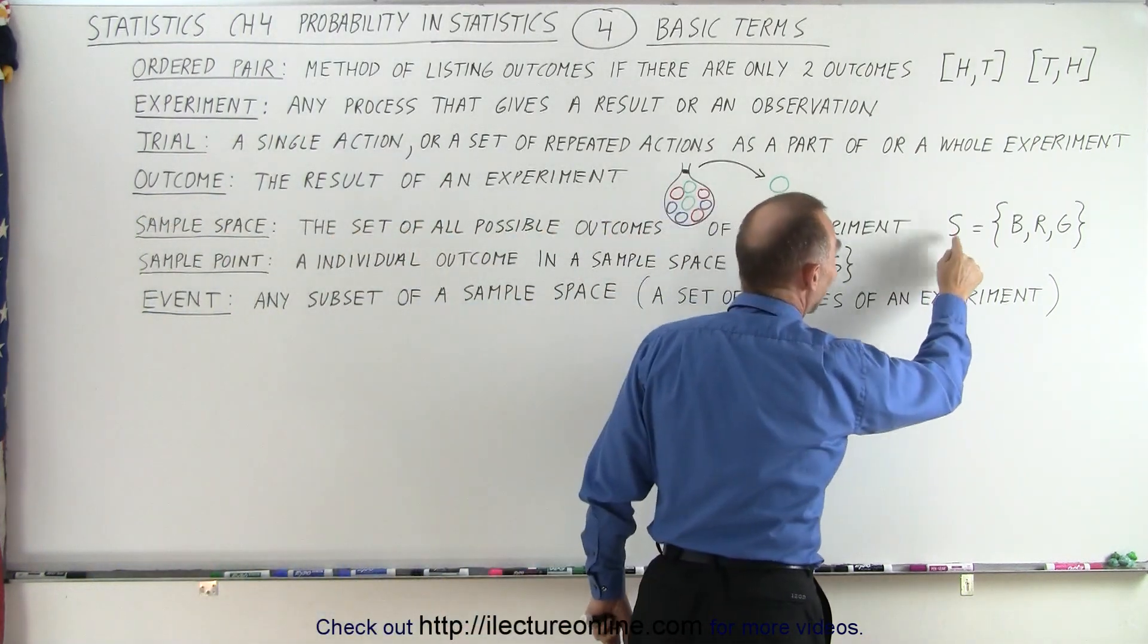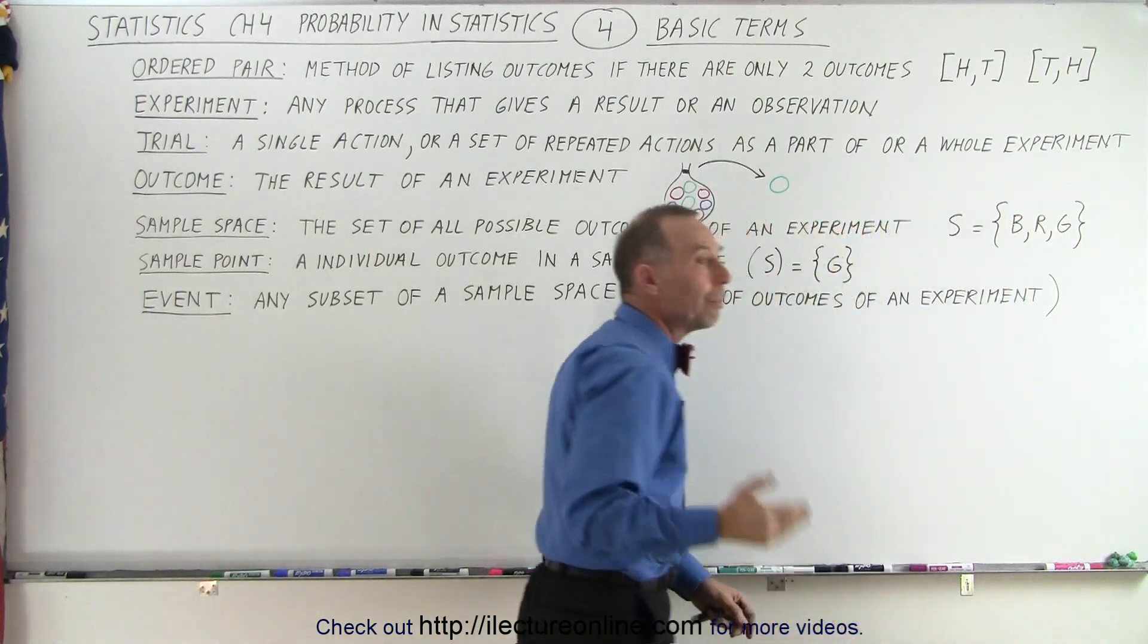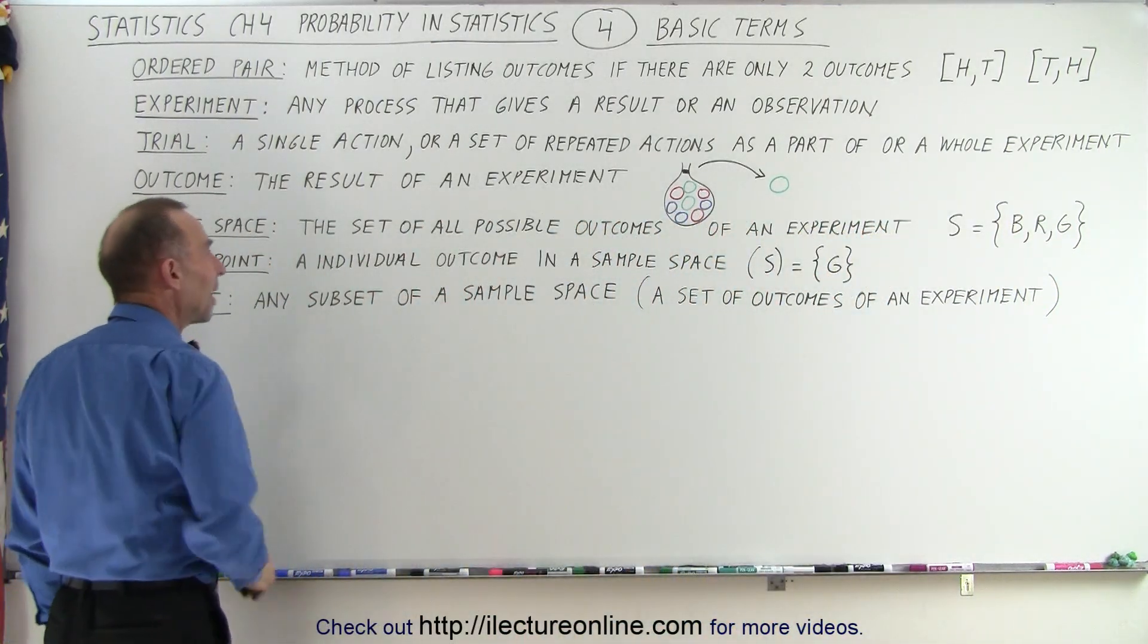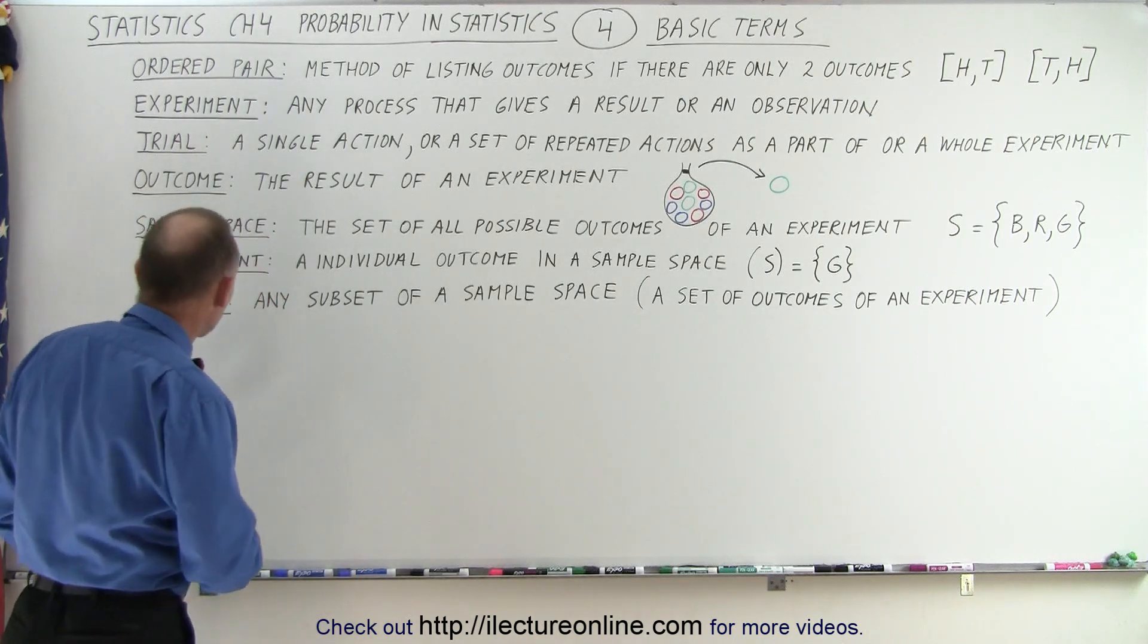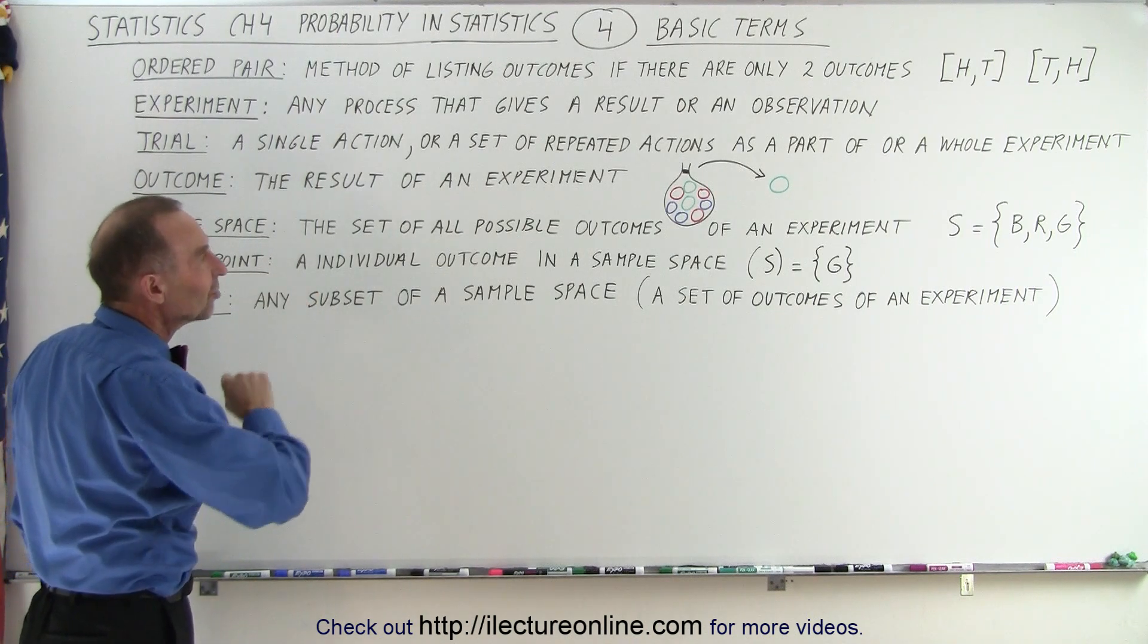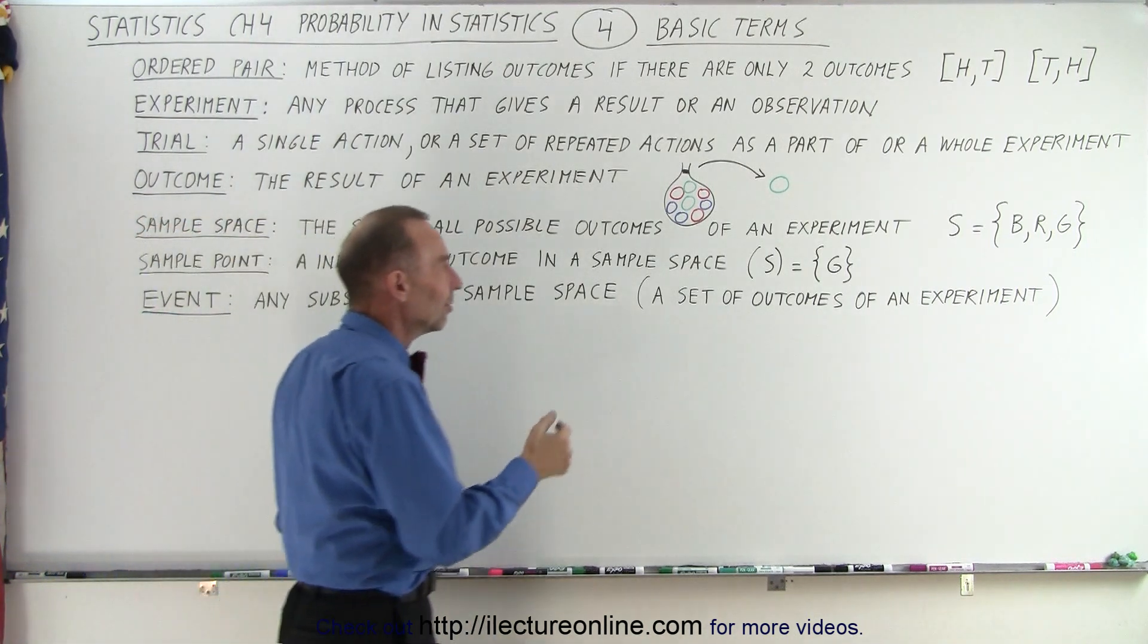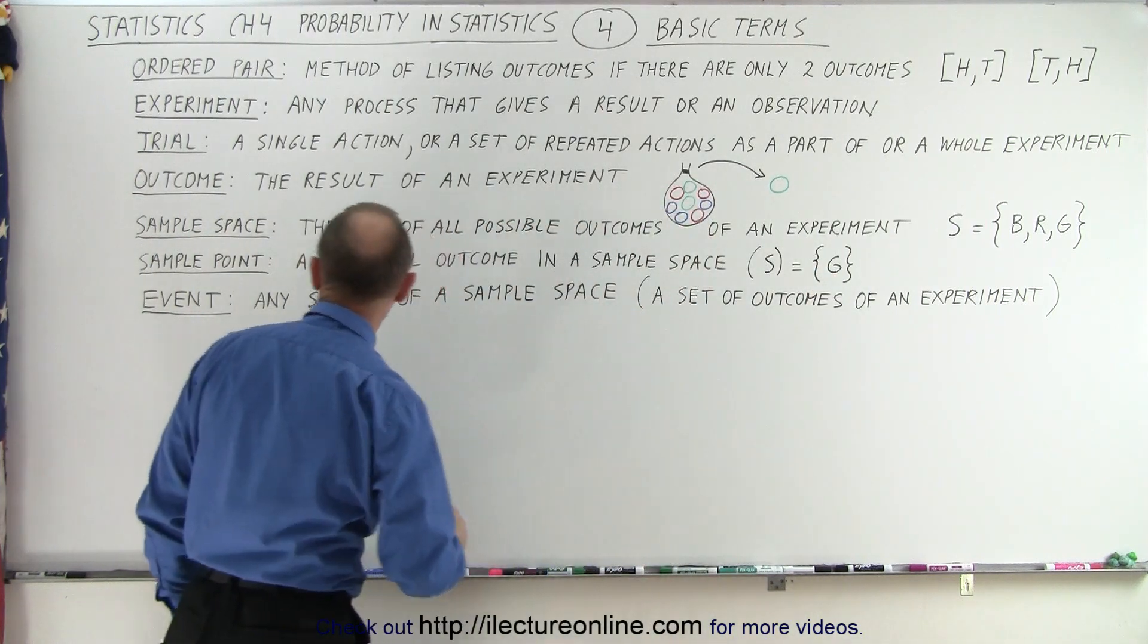And so I use the word S, and with parentheses like this, I list all the possible outcomes. And so that's called the sample space. In this case, the sample space is three different types of outcomes. The sample point is an individual outcome in a sample space. So in this case, the fact that I got green is what we call a sample point of the sample space.